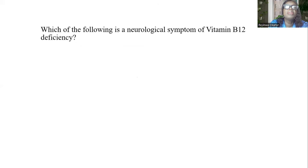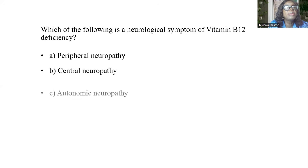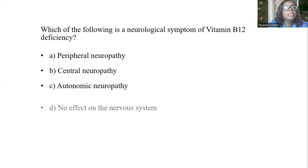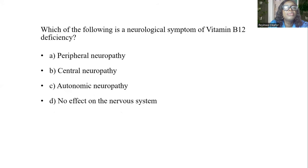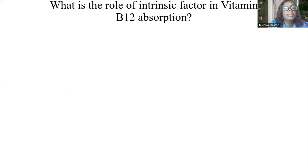Which of the following is a neurological symptom of B12 deficiency? A, peripheral neuropathy. B, central neuropathy. C, autonomic neuropathy. D, no effect on the nervous system. The answer is A, peripheral neuropathy.